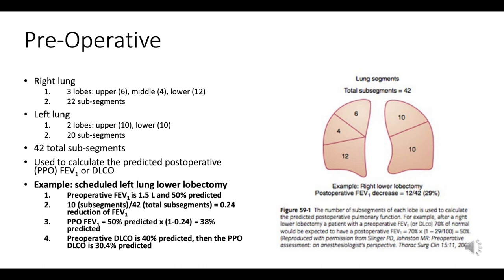Each lung is divided into lobes, and each lobe further divides into subsegments. The right lung has three lobes: upper with 6 subsegments, middle with 4 subsegments, and lower with 12 subsegments — totaling 22 subsegments. The left lung has two lobes: upper with 10 subsegments and lower with 10 subsegments — totaling 20 subsegments. Combined, both lungs have a total of 42 subsegments.